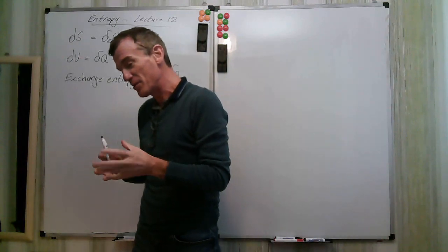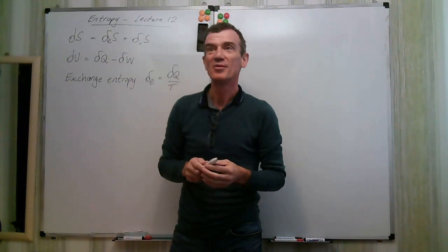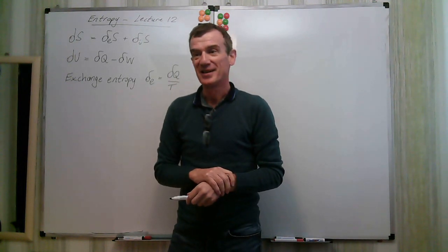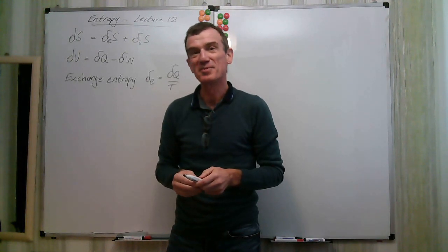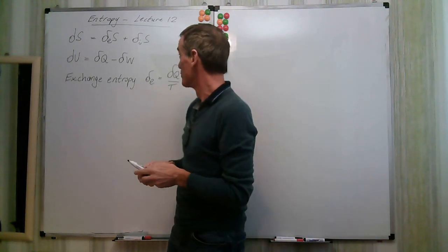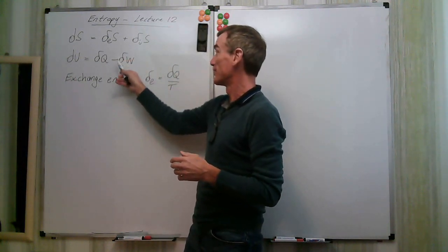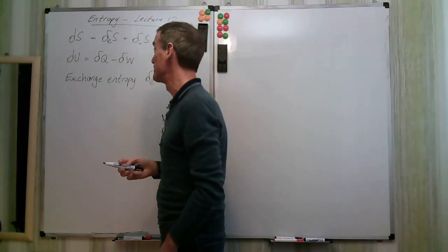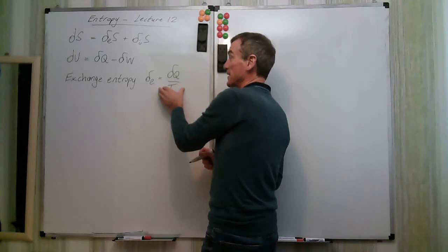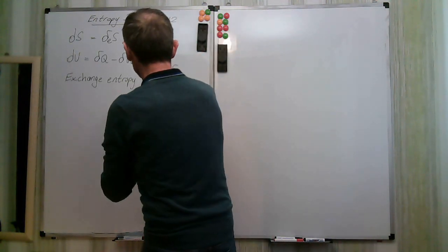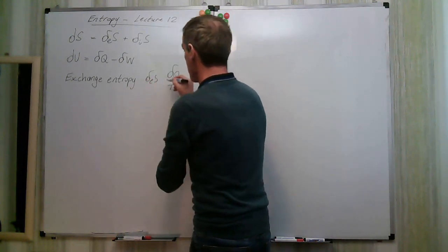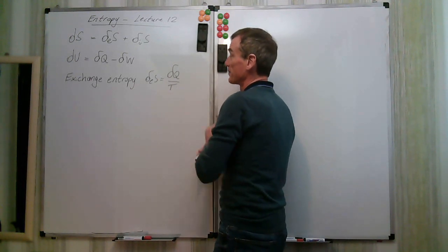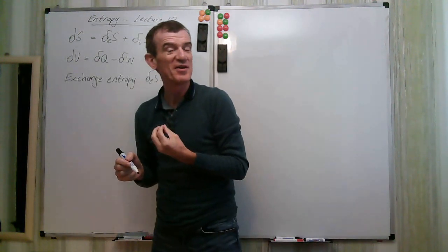Heat and work are somehow different. Work is a very ordered form of energy transfer; heat is disordered, and disorder is what entropy is about. Work is not involved at all as far as increase in entropy is concerned — it's to do with heat transfer. This is the main source of transfer of entropy and it's given by delta q over T.